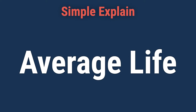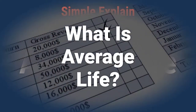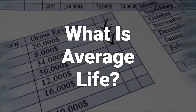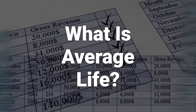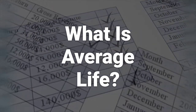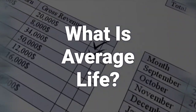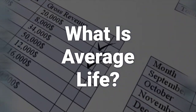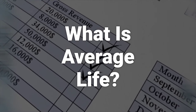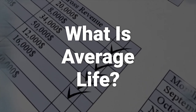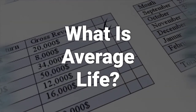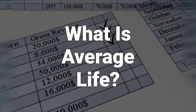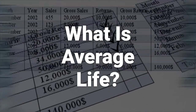Today, we will talk about average life. The average life is the length of time the principal of a debt issue is expected to be outstanding. This is called the average life, and it does not take into account interest payments, but only principal payments made on the loan or security.